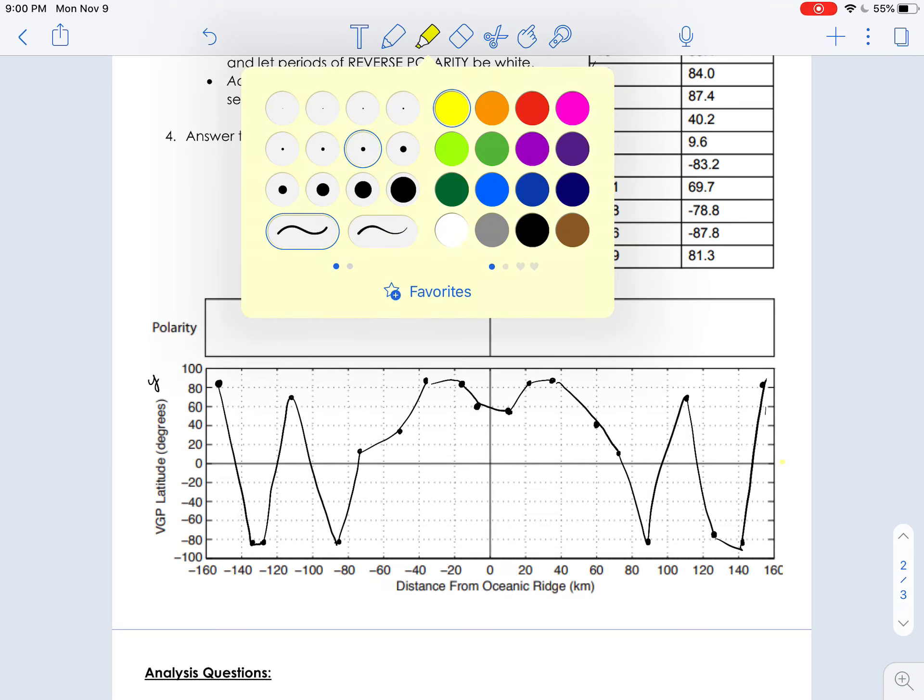So there's two things that I'd like to point out to you. The first has to do with your x-axis. Notice that this is distance from the oceanic ridge in kilometers. That means that zero is the actual oceanic ridge.